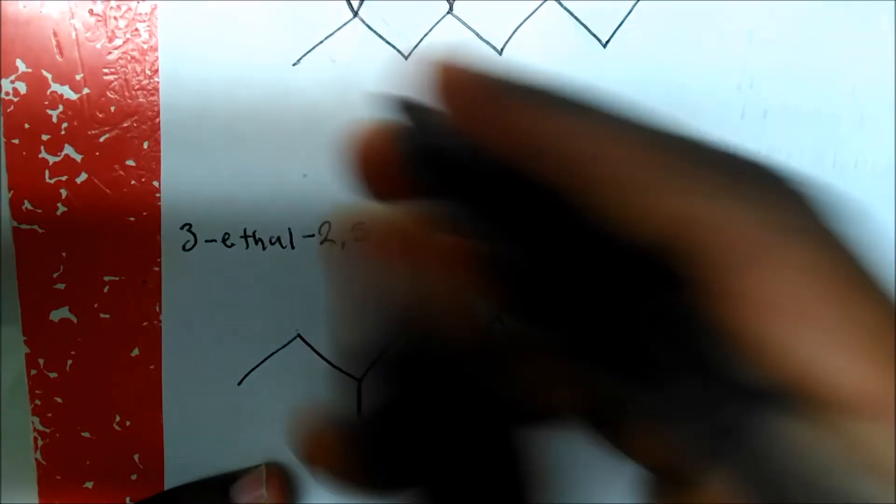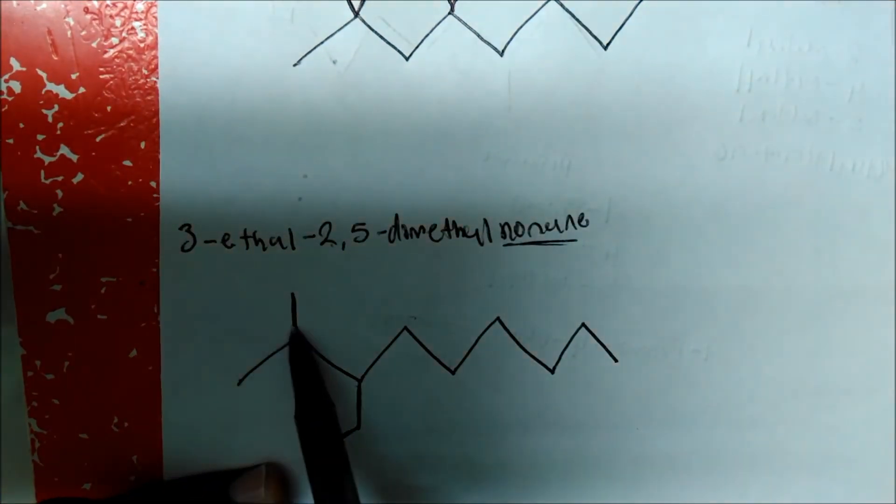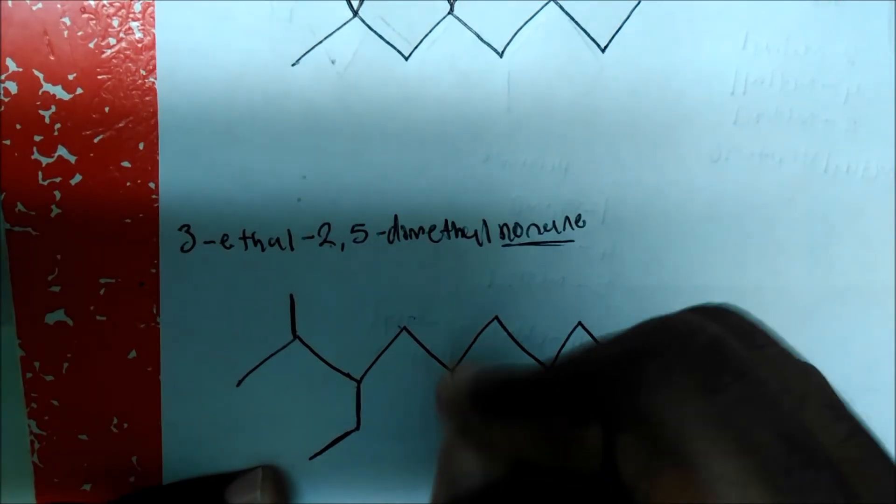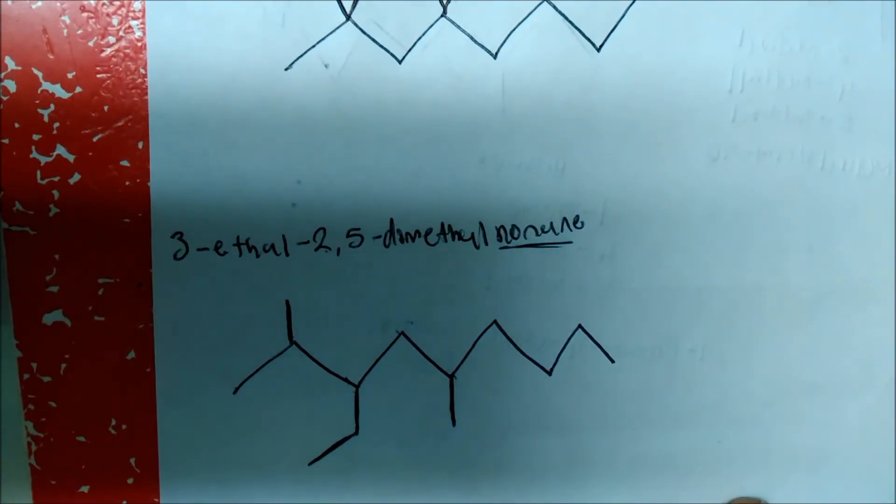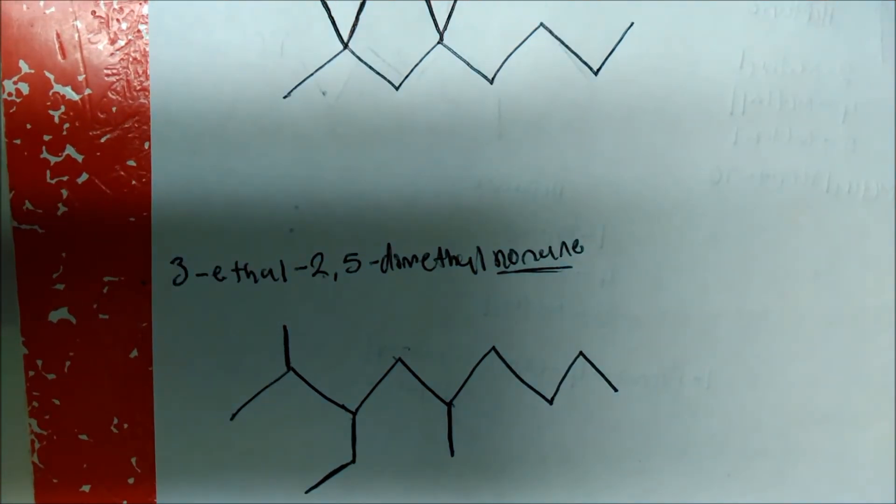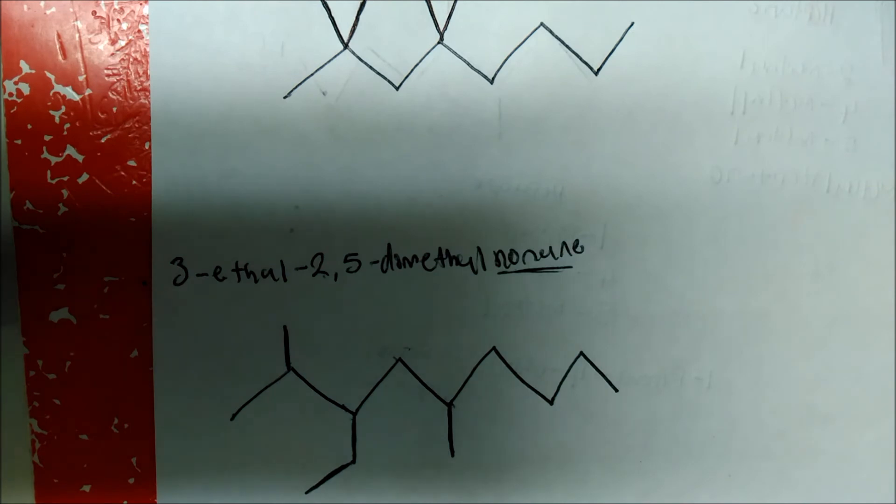So on carbon 2, I have a methyl group. So carbon 1, 2, 3, 4, 5. This will be my other methyl group. And this will be the structure for that specific name.